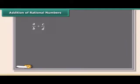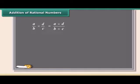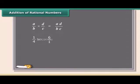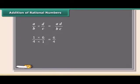Division of rational numbers is also very simple. First, flip the second number over to make it a reciprocal, then do a simple multiplication. For example, we will divide 1 by 4 by 1 by 6. Turn the second fraction upside down so it becomes a reciprocal, then multiply the first fraction by that reciprocal. This fraction can be further simplified to 3 by 2.